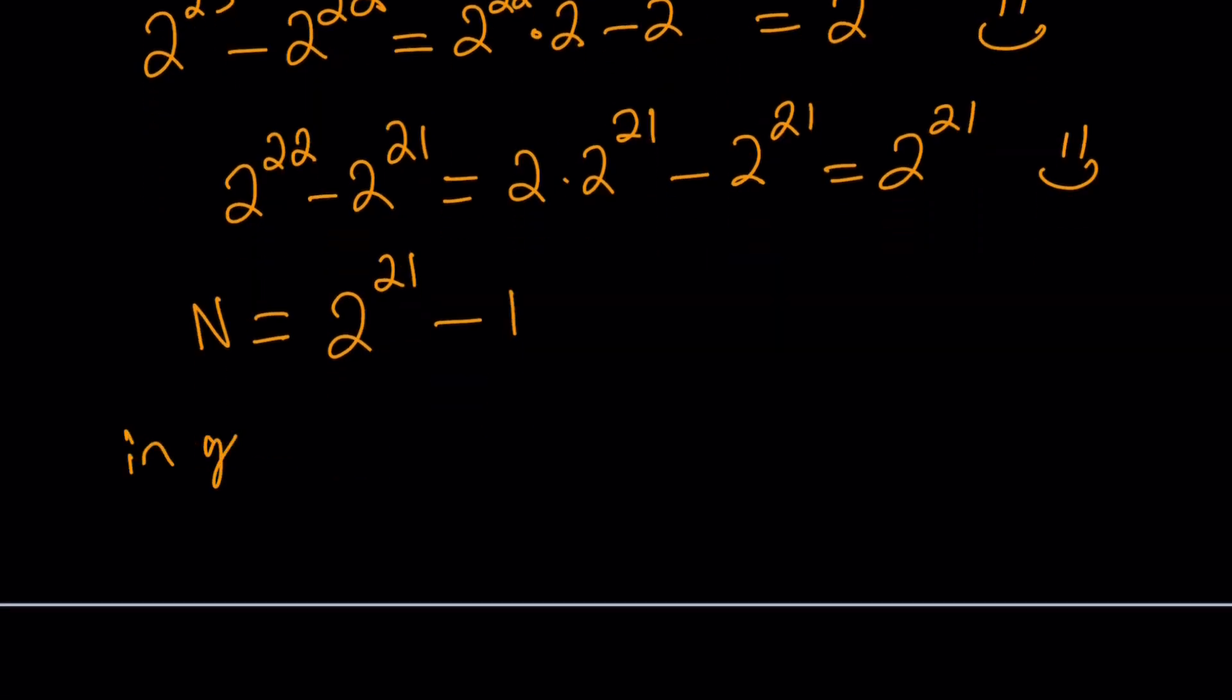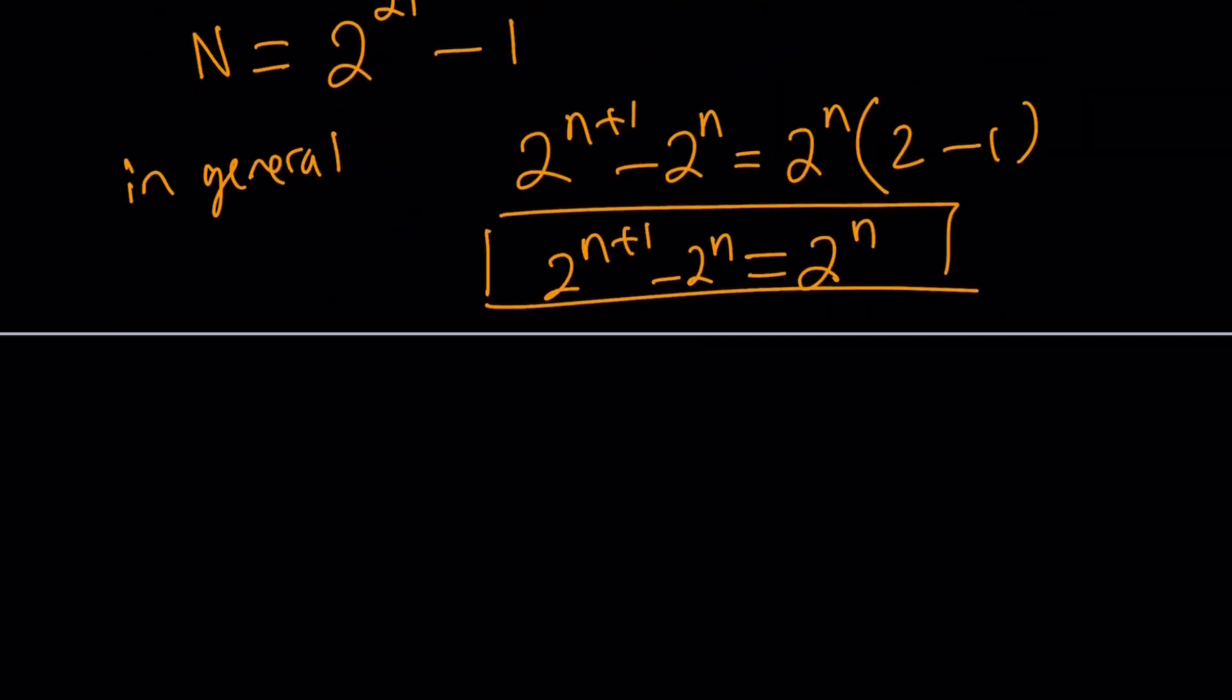Now, we can generalize this. In general, if you subtract 2 to the n plus 1 minus 2 to the n, you can basically write this as 2 to the n parentheses 2 minus 1, which is the same as 2 to the n. Okay, so as a general rule, we can say that because if you think about it, if you add 2 to the n plus 2 to the n, you get 2 to the power of n plus 1. If you add 2 of the same powers, you get another power of 2.